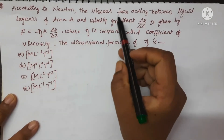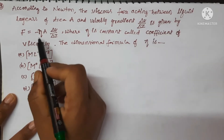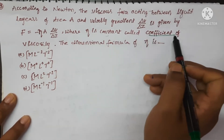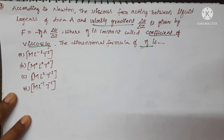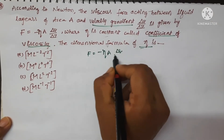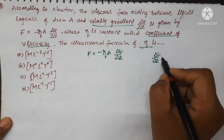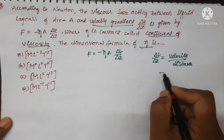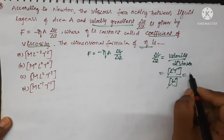According to Newton, the viscous force acting between liquid layers of area A and velocity gradient dv/dz is given by F = −η × A × (dv/dz), where η is a constant called coefficient of viscosity. Here dv/dz is the velocity gradient, which equals velocity upon distance. The dimensional formula of velocity is LT⁻¹ upon L, so L will get cancelled and the remaining term is T⁻¹.